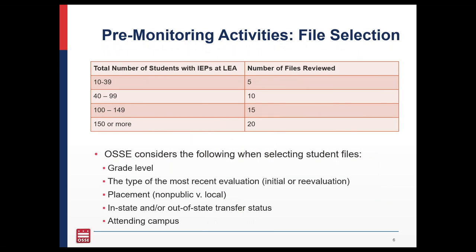This slide reviews our file selection process for LEAs and pre-monitoring activities, listing the total numbers of students in your LEA with IEPs and how many files OSI will review. If possible, OSI will select files with a diversity of values for criteria including grade level, type of most recent evaluation, placement (local or non-public), transfer status, and attending campus. Students selected for review will be uploaded into your LEA's Box file four weeks before your desktop review.